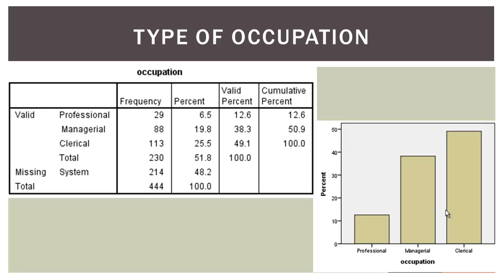Welcome back to part two of the week three lecture. In the first part of the lecture we looked at describing the distribution of a metric variable and then at the one sample t-test. Now we're going to have a look at the equivalent analyses and reports for a categorical variable.